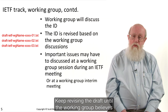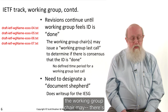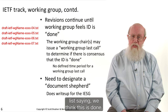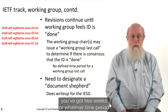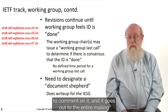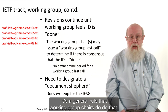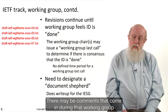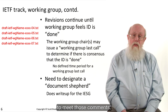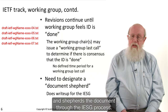Keep revising the draft until the working group believes it's ready to move. When the working group thinks it's done, the working group chair may issue what is known as a working group last call — a special message to the mailing list saying "we think this is done, you've got two weeks to comment on it." There may be comments that come in during that last call period, which may require revisions of the internet draft. The working group will also have to designate a document shepherd, who does a write-up for the IESG and shepherds the document through the IESG process.